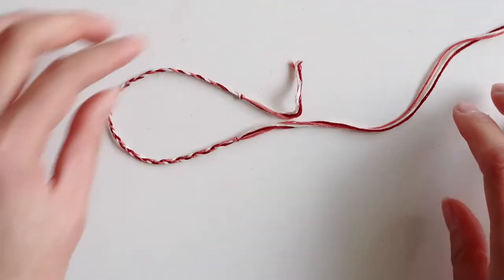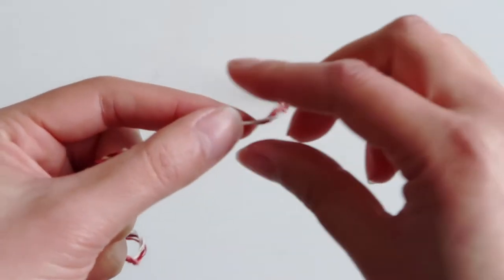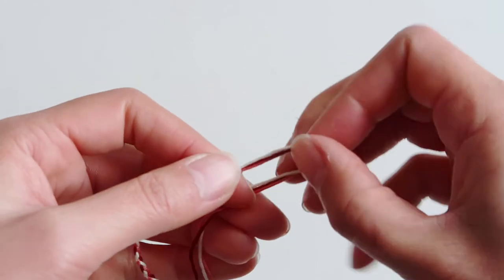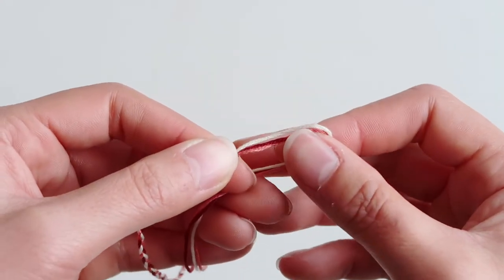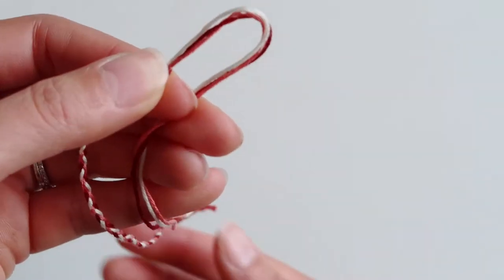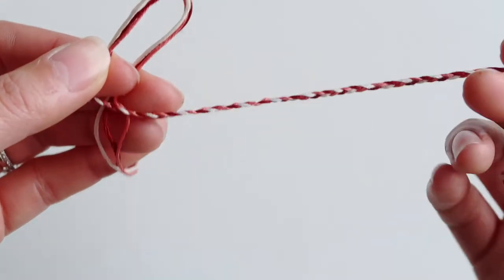But I'm going to make an adjustable knot using the bracelet itself, not an extra piece of string. So it is the same technique as the previous knot, but you're just using the ends of the bracelet to create the knot instead of the separate piece of string.